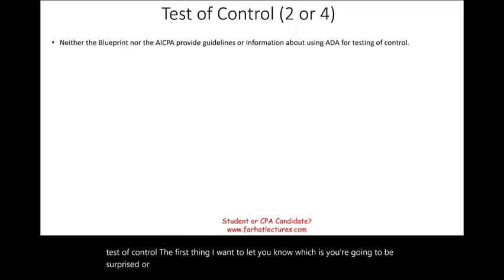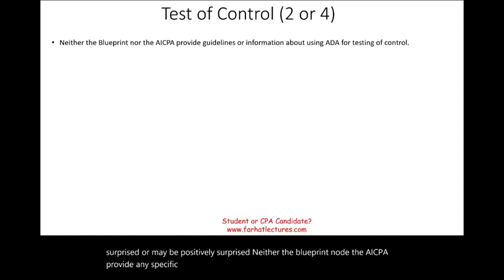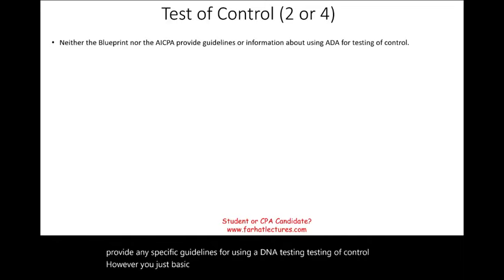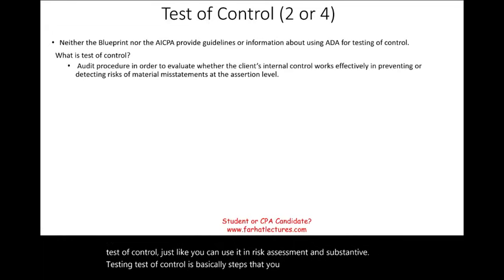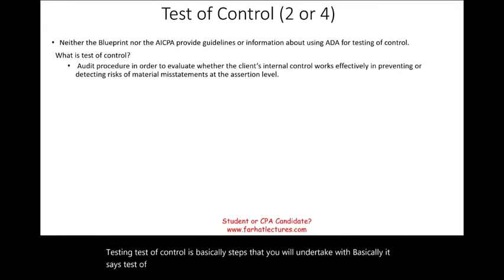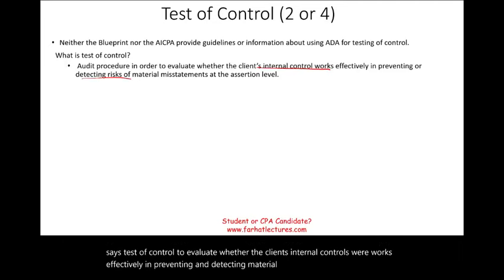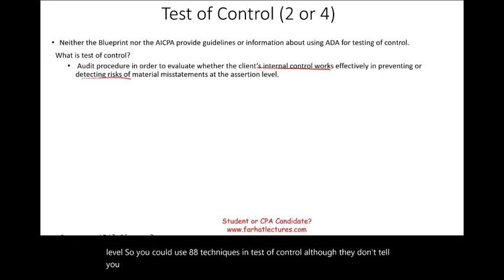The first thing to know — and you might be positively surprised — is that neither the blueprint nor the AICPA provide any specific guidelines for using ADA in testing of control. However, basic common sense tells you that you could use ADA in test of control, just like you can use it in risk assessment and substantive testing. Test of control is basically steps you undertake to evaluate whether the client's internal controls work effectively in preventing and detecting material misstatement at the assertion level.